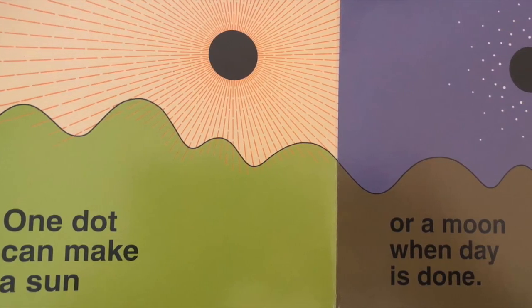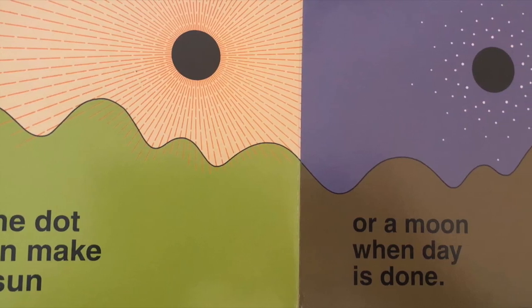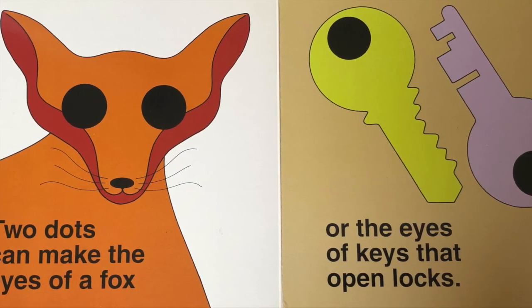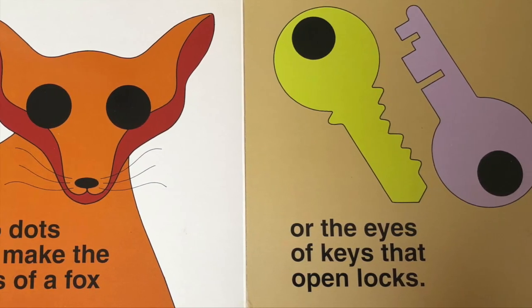One dot can make a sun or a moon when day is done. Two dots can make the eyes of a fox or the eyes of keys that open locks.